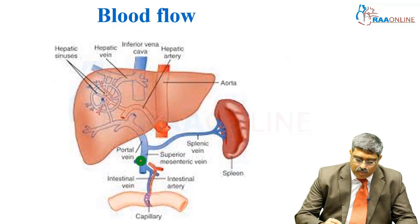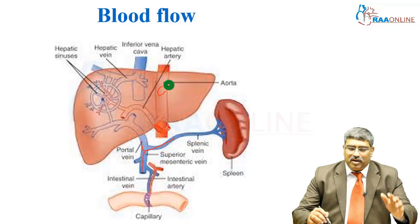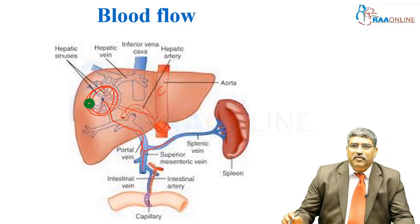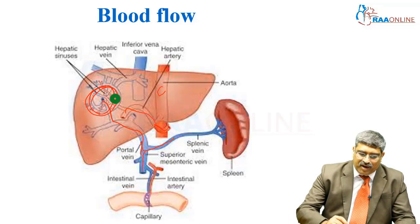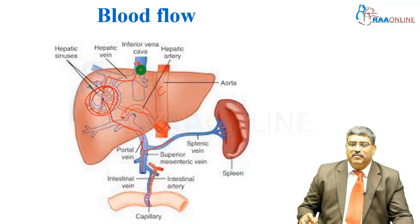Here you can see the portal vein, which is formed by the superior mesenteric and the splenic vein. The hepatic artery arises from the celiac artery of the abdominal aorta, and both this artery and vein go into the liver. Finally, drainage is from the hepatic vein into the inferior vena cava.